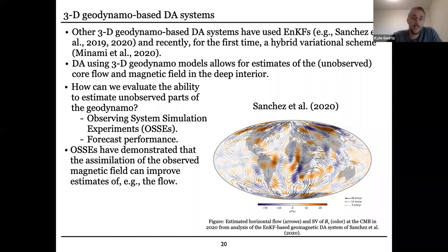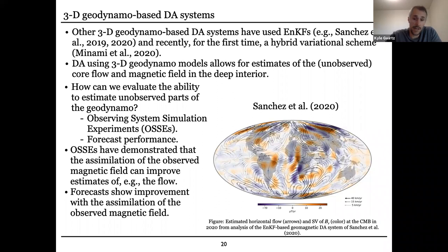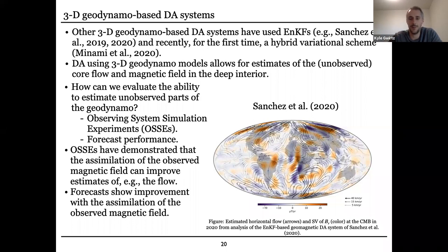The ultimate way to evaluate how well you're doing is to just look at your success in forecasting future changes. The observing system simulation experiments have shown that given enough data and the right conditions, you are getting much improved estimates of the core flow, particularly at the boundary but also tens of kilometers below the core-mantle boundary into the outer core. Forecasts show improvement with the assimilation of these magnetic field observations, and continue to show improvement up to the present day as we get more and more observations available.